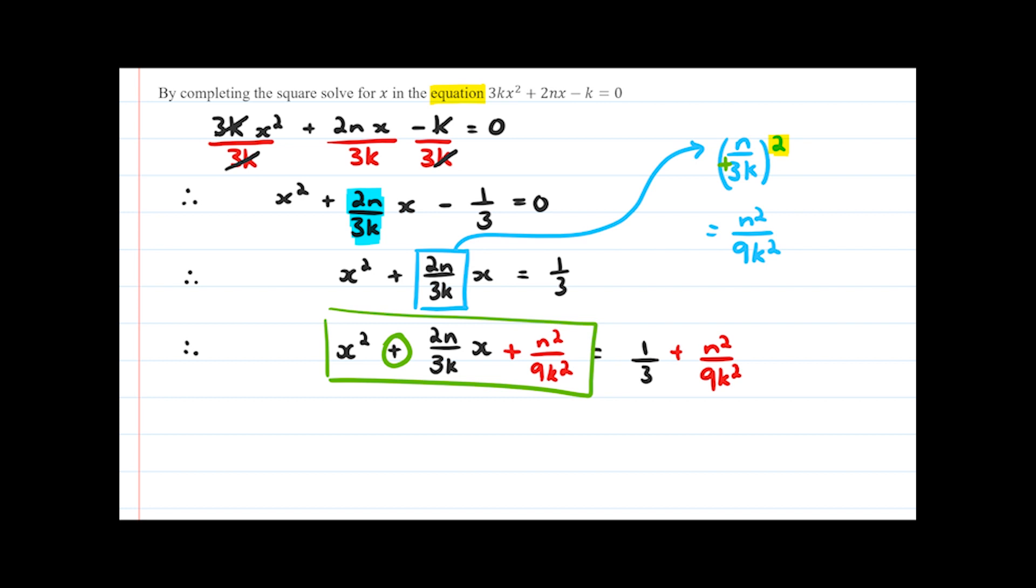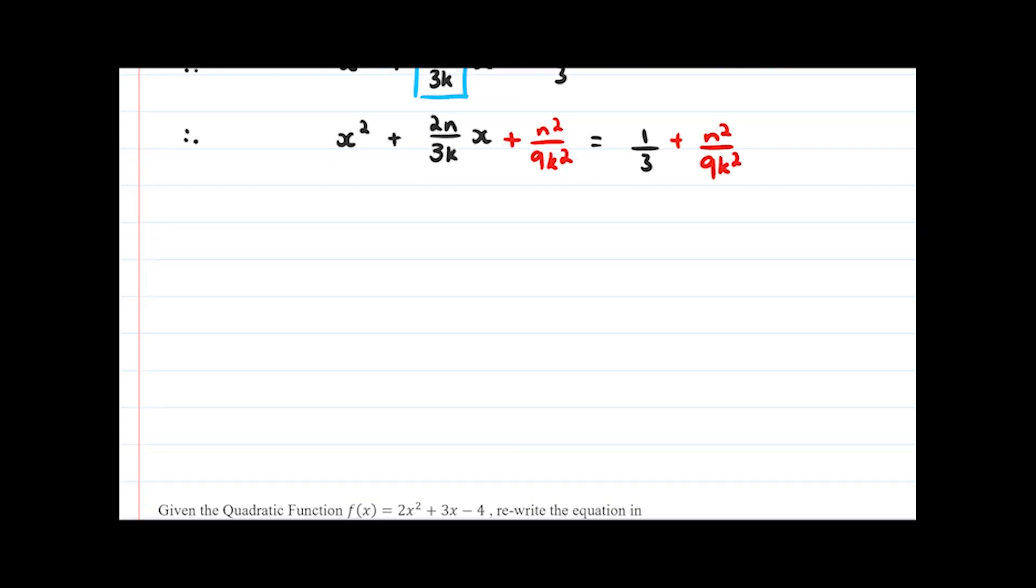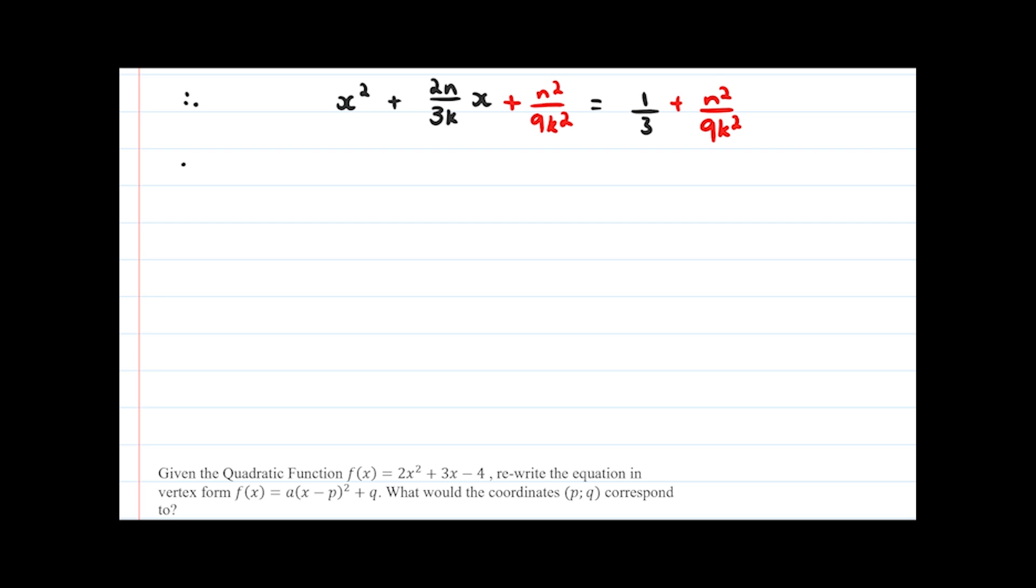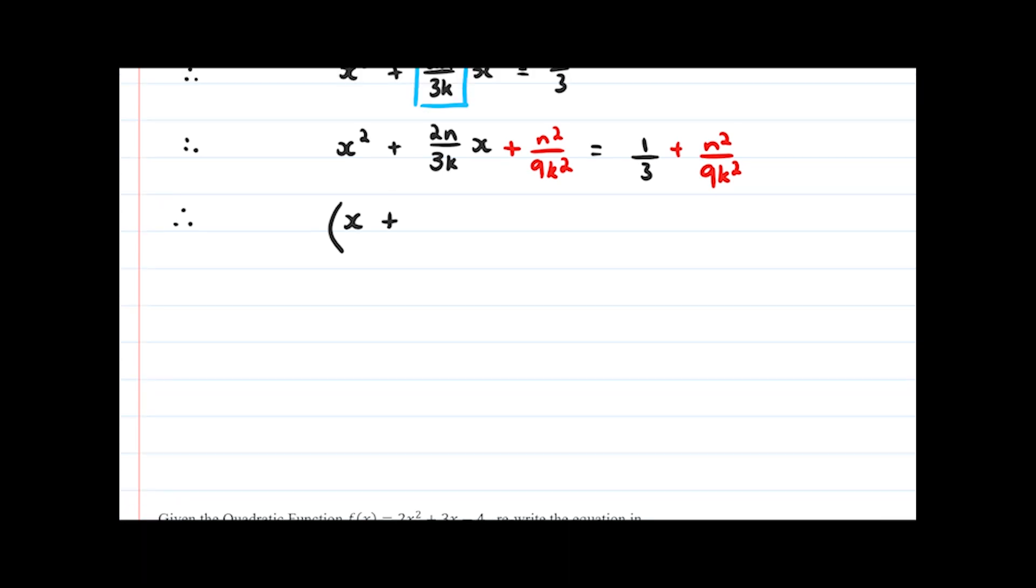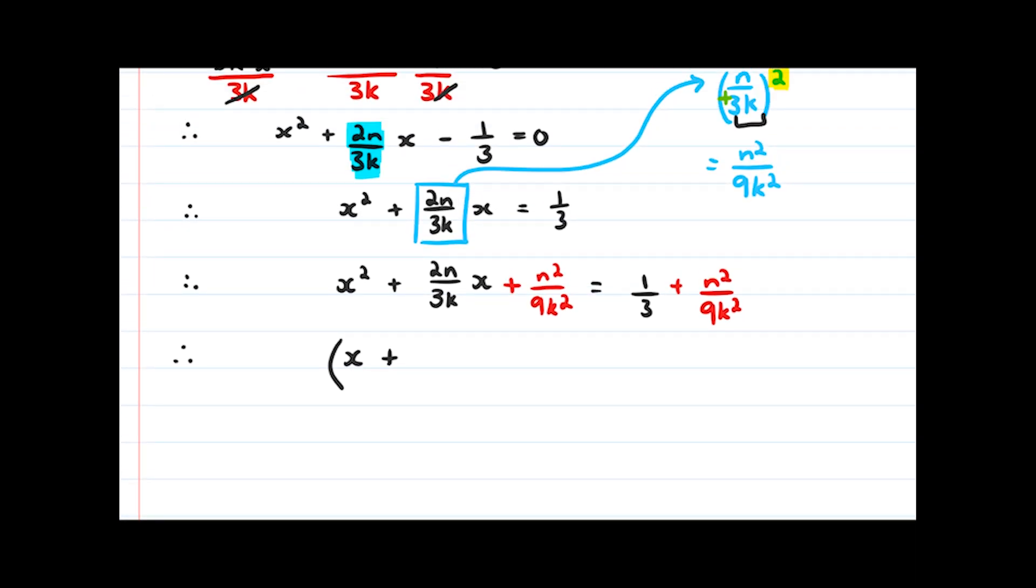Keep note of all of the signs that you've been using, that positive you carried up into the bracket over there, and likewise if it was negative you would have carried that up as well. So factorizing this term will give us (x + n/3k)². Now we can find a lowest common denominator on the right hand side and that's going to give us (3k² + n²)/9k².